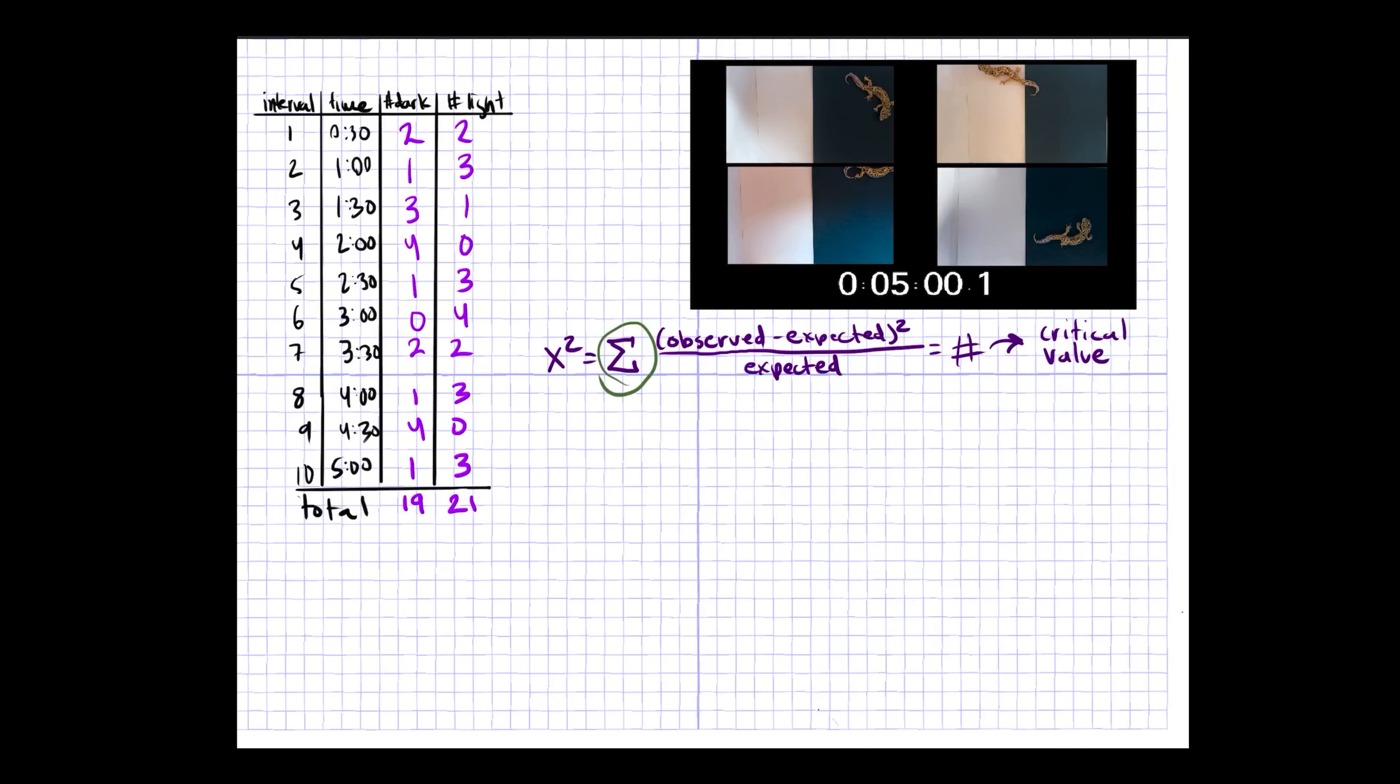The summation symbol means you're adding up all of the treatment groups. In this case you have two treatment groups: the dark group and the light group. Remember, each one of these intervals on the left, these are treatments, but you're testing two groups - the group of light and the group of dark. What you want to know is whether or not the total in the dark group and the total in the light group are significantly different.